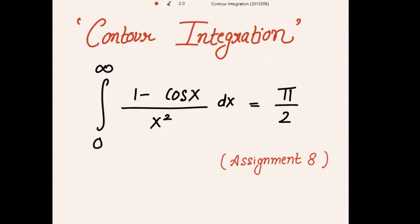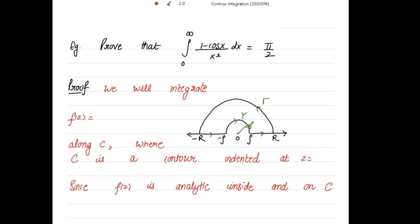Good morning. This is assignment on contour integration — a very important and expected one. We have to prove that the integral from 0 to infinity of (1 - cos x) over x² dx is equal to π/2. Because we have (1 - cos x) in the numerator, for f(z) I write in the numerator: 1 as it is, the negative sign, and then cos x is changed into e^(iota z), with denominator z².